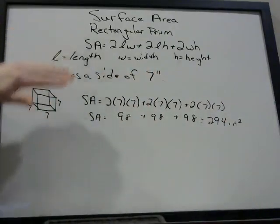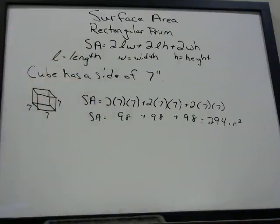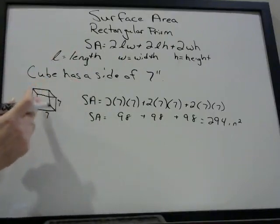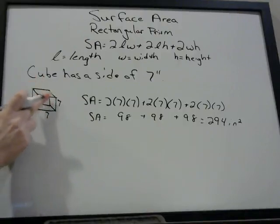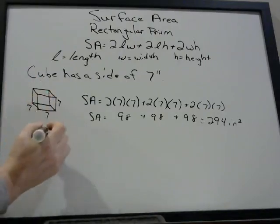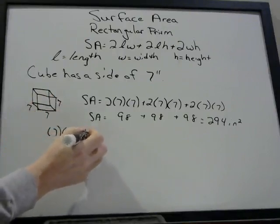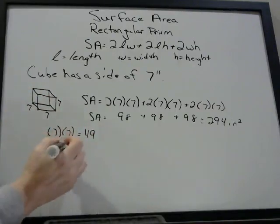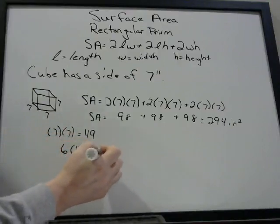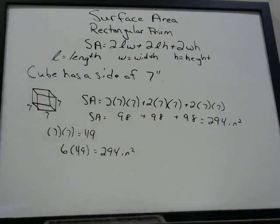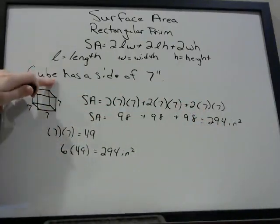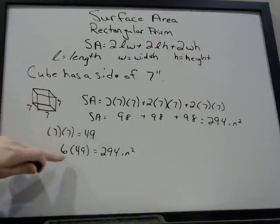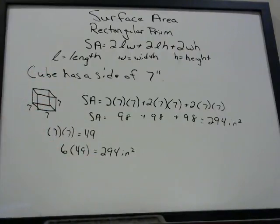You can always use the formula. If you have a cube, you can also use a shortcut — because the area of each face is the same, you only need to find the area of one side and multiply it by 6, since there are 6 sides, and that gives you the surface area of a cube. The area of one side is 7 times 7, which is 49. Multiply that by 6 and you get 294 inches squared — the same answer as when we used the whole formula. This is just a shortcut for the case of a cube.